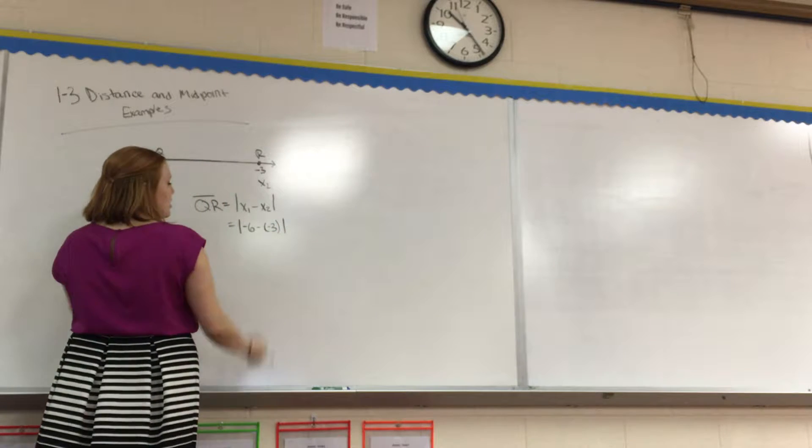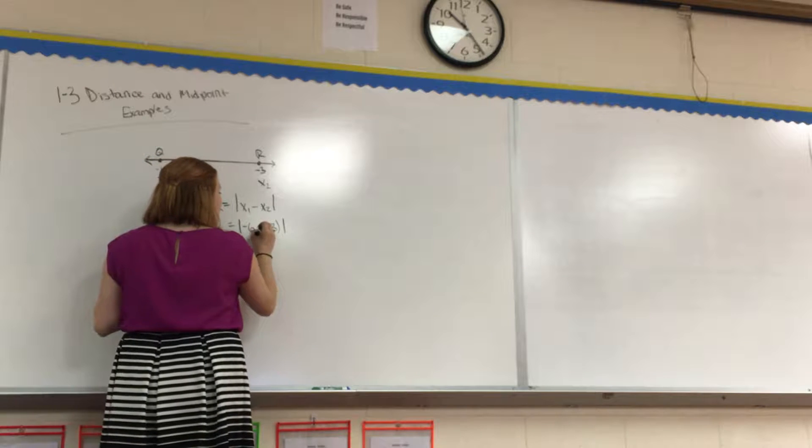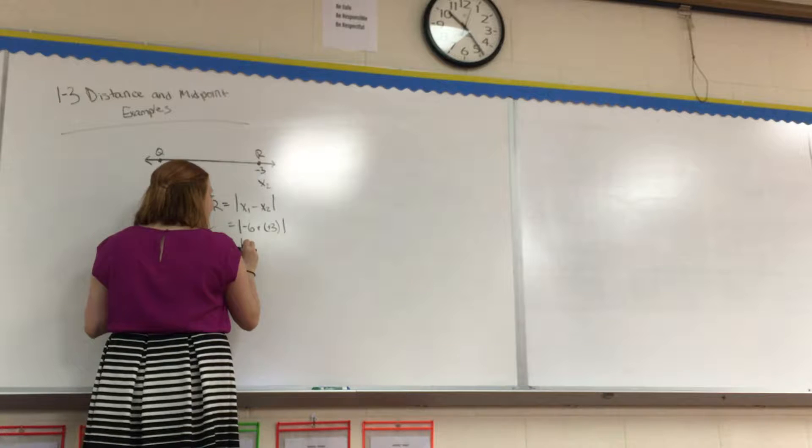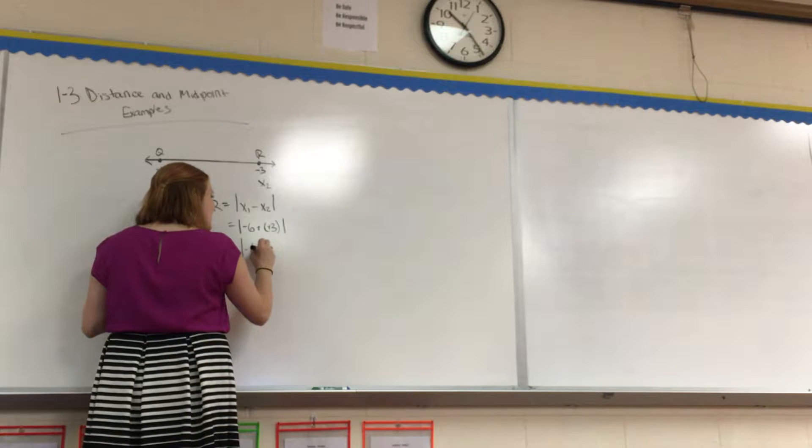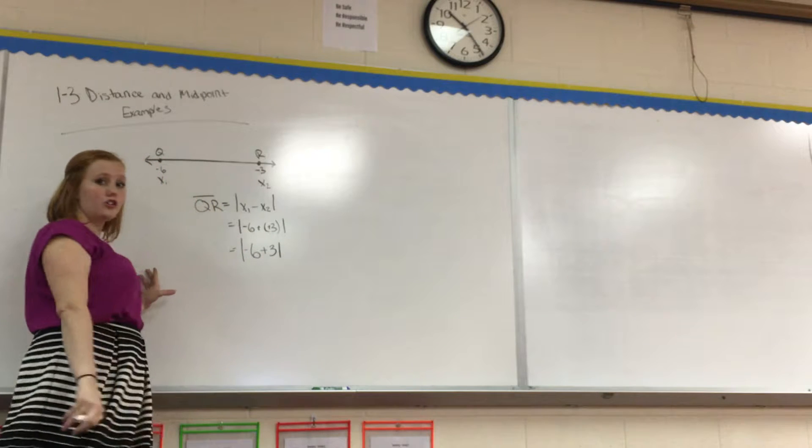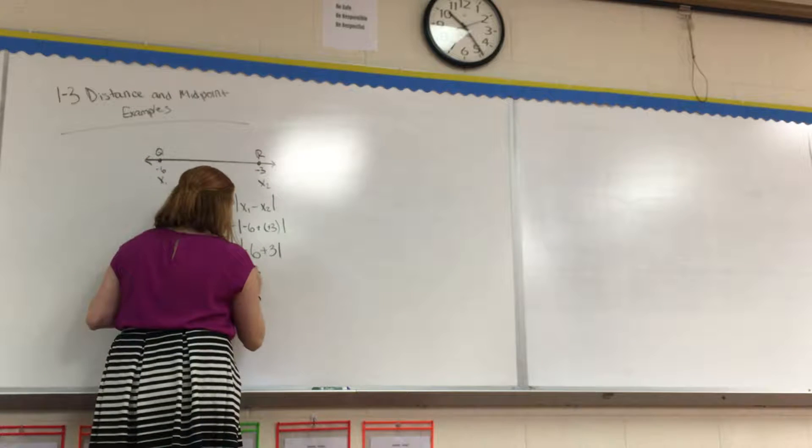We have two negatives like this. We change them both to positive, the two-stick theorem, like you guys probably have heard from Ms. Cook. So we have negative 6 plus 3, which equals negative 3.